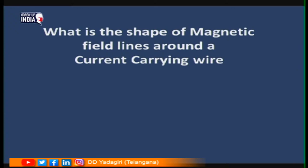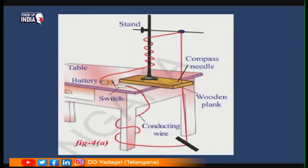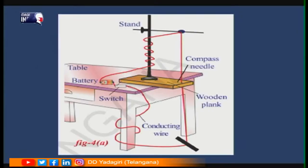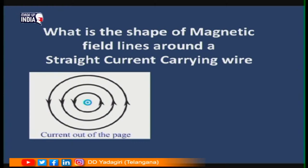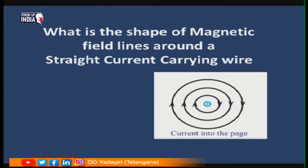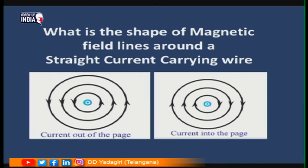The shape of the magnetic field lines around a current-carrying wire is circular due to symmetry. In a virtual activity, imagine a wire set up through a table connected to a battery. The magnetic field lines will be perpendicular to the wire and circular in shape. If the current is coming out of the paper (represented by a dot), the magnetic field lines are anticlockwise. If the current is going into the paper (represented by a cross), the magnetic field lines are clockwise.